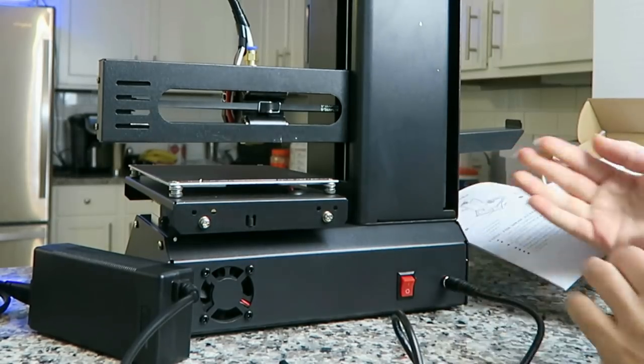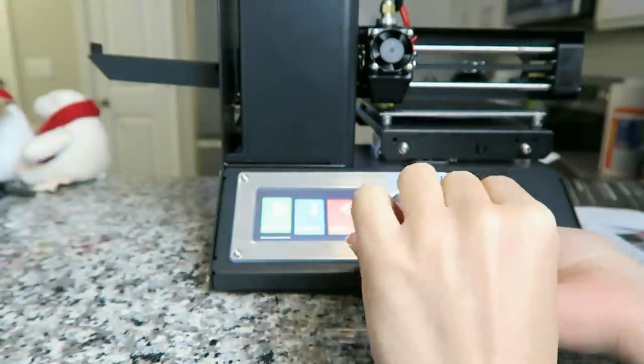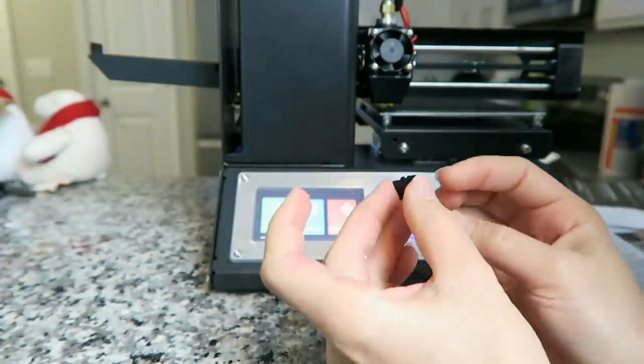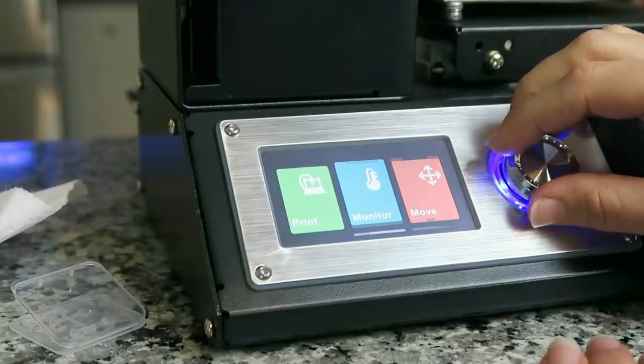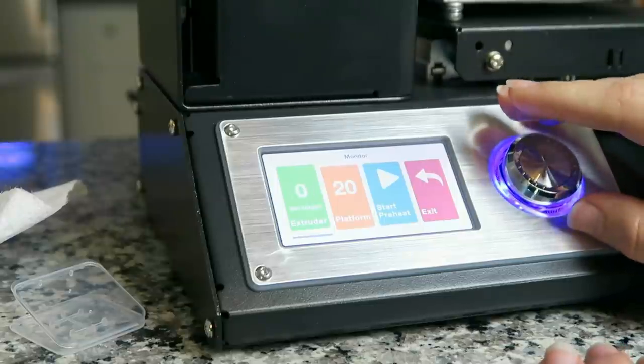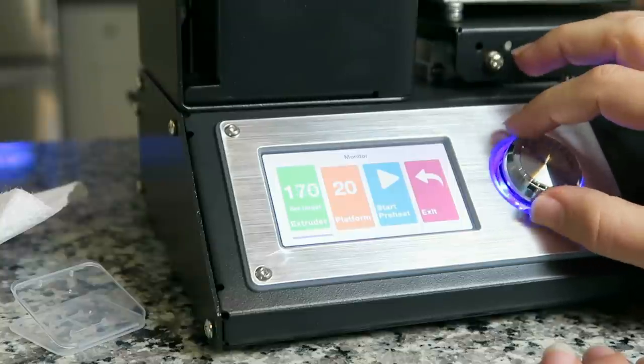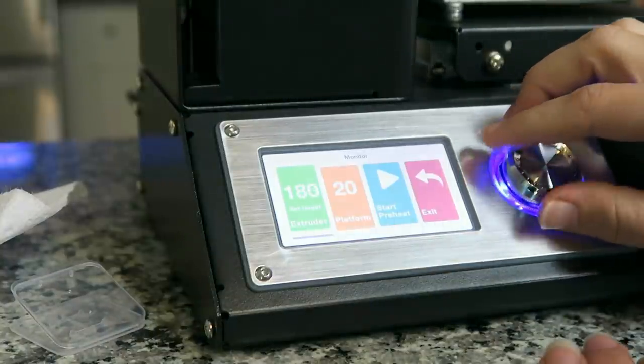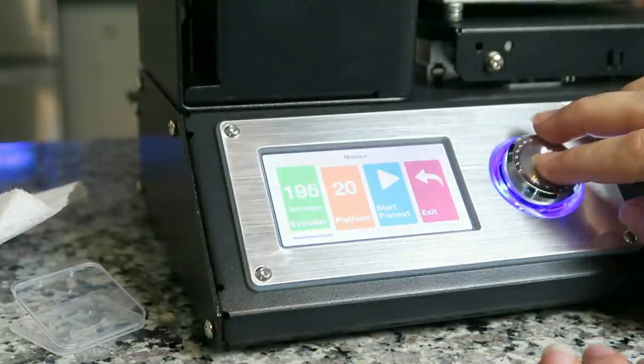We also need to insert the SD card, which is preloaded with a test print. The nozzle needs to be preheated so we can insert the filament. We've got to go to monitor and heat up the extruder. We're going to heat it up to 195 or so, and we're going to be inserting first the sample PLA that comes with the printer. Now this menu, it kind of looks like a touch screen, but it's not. You just have to use the dial for everything.